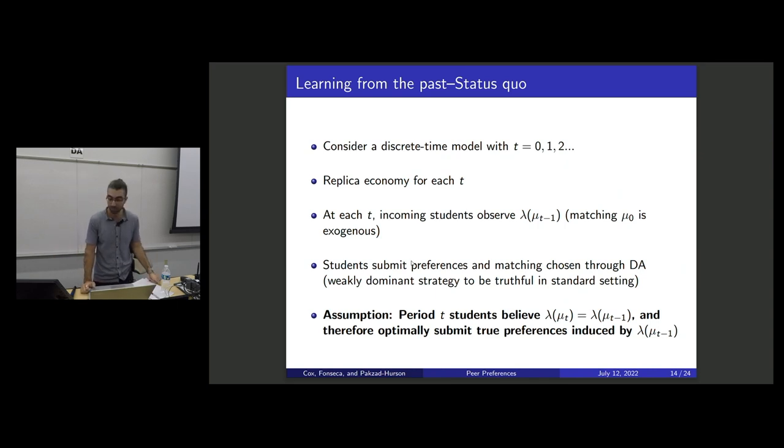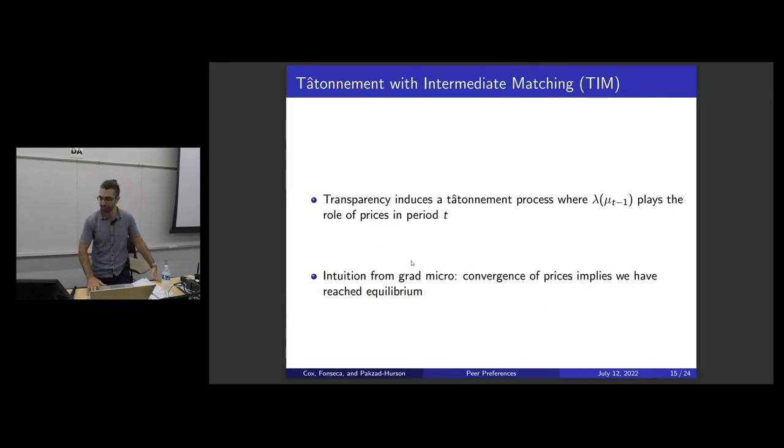And then students are going to observe this. They're going to submit their preferences using deferred acceptance. And if they have sufficiently strong beliefs, if they actually believe that the students are going to look the same this year as last year, then we should expect them to report their preferences truthfully given what they saw last year. If you don't like this assumption, I don't blame you. We do a fair bit of empirical work to show that this is true. We actually construct a mechanism where the incentive properties make it so the students should believe this.